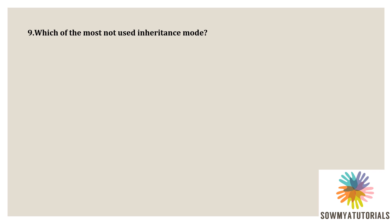Next question: which mode is most not used in inheritance? Options are option A: public, option B: private, option C: protected, option D: both A and B. The correct answer is option B, private, because the private members of a base class cannot be inherited by derived classes.